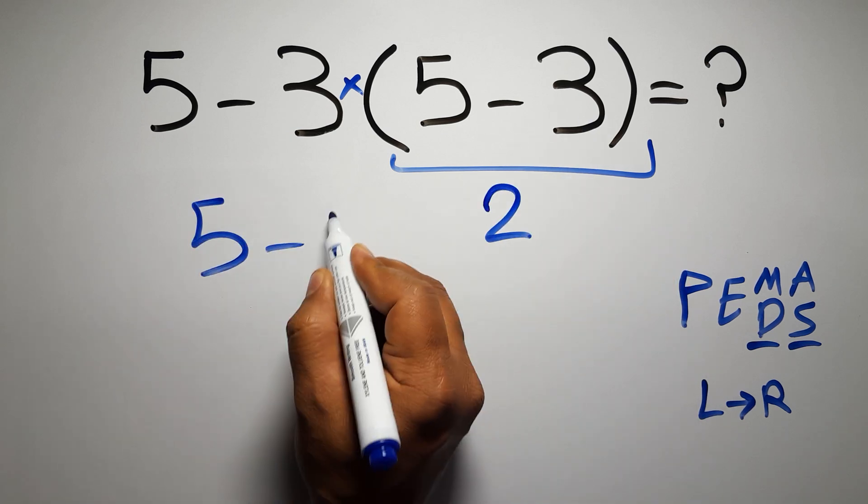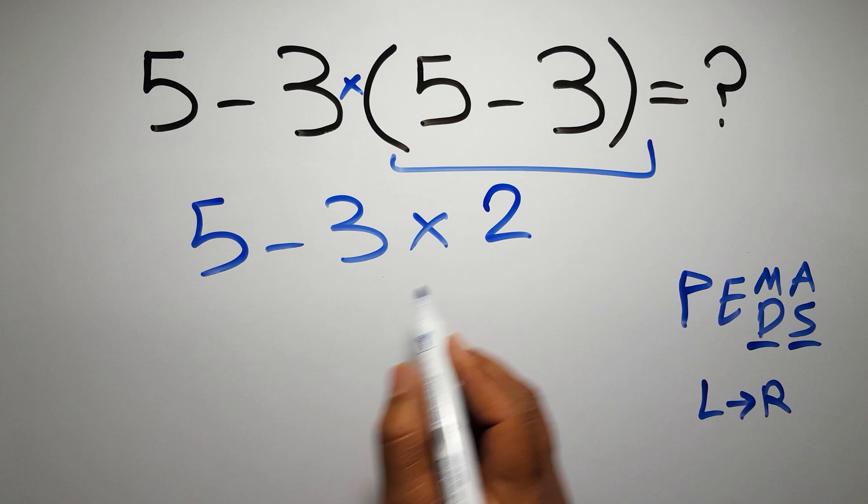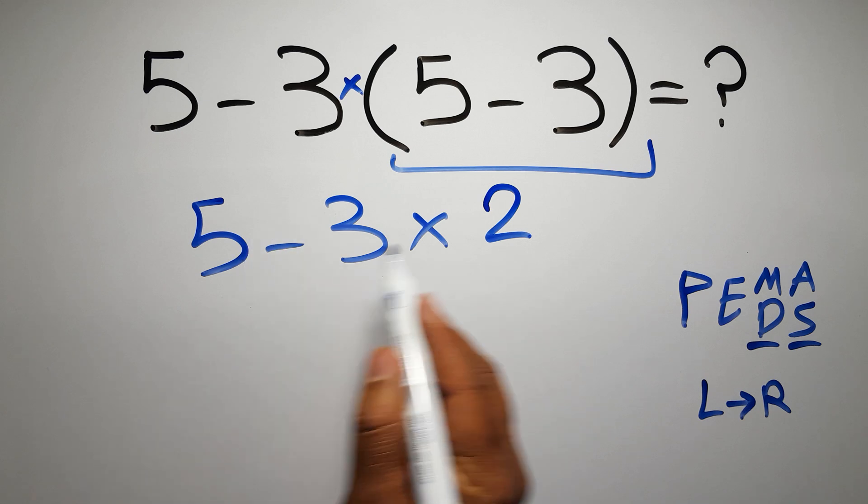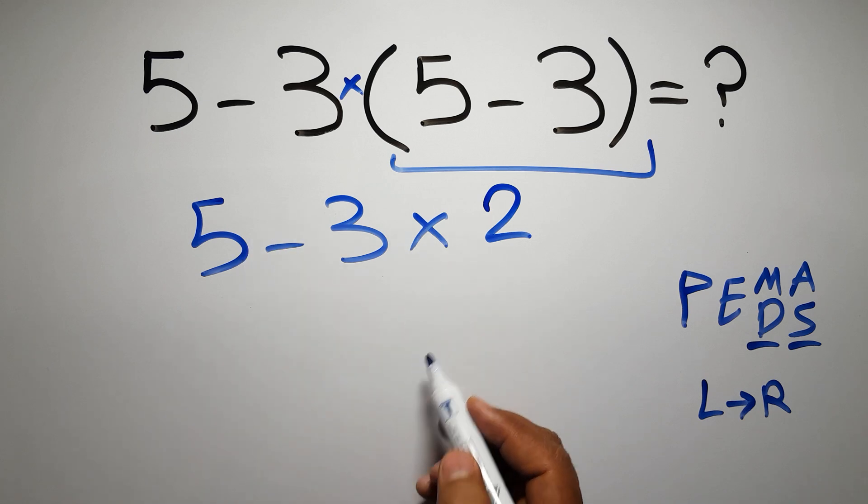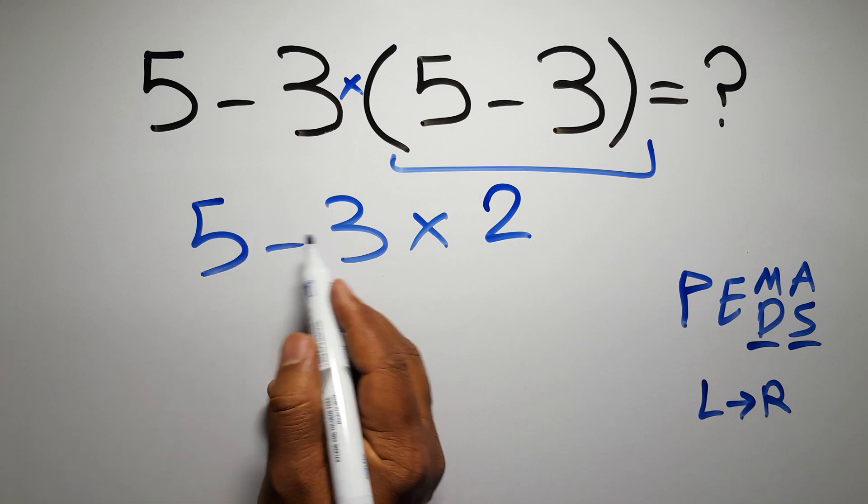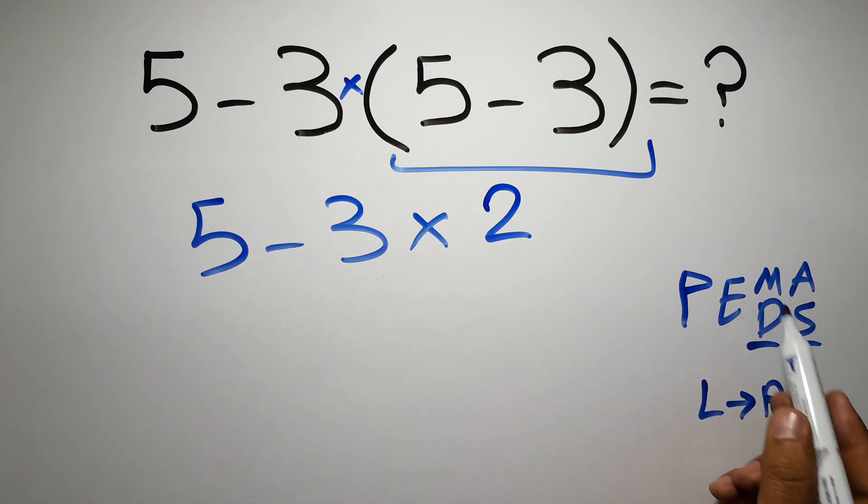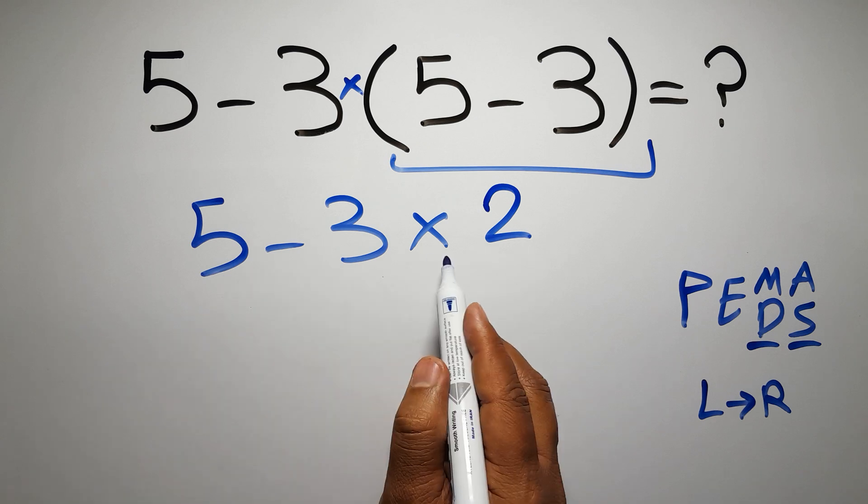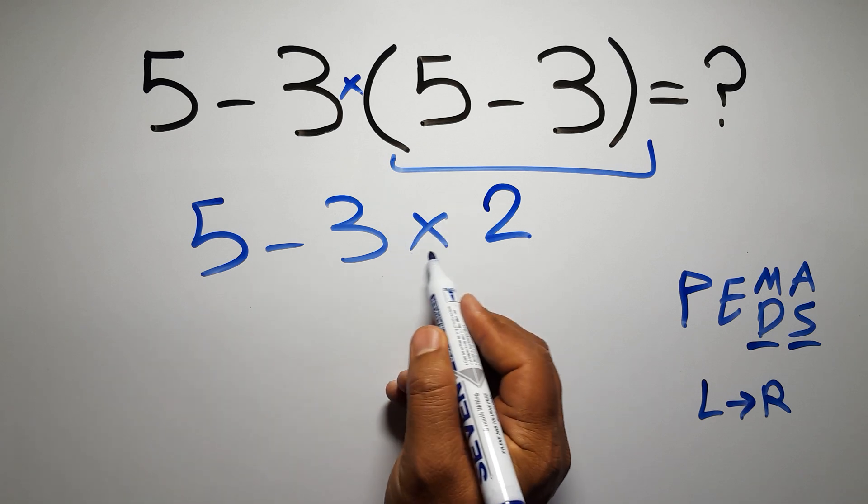So, 5 minus 3 times 2. Now we have one subtraction and one multiplication. Multiplication has higher priority than subtraction, because in PEMDAS, multiplication comes before subtraction. So now, first we have to do this multiplication.